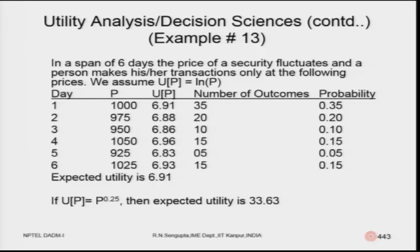Consider Example 13. Over a span of six days, the price of a security fluctuates, and a person makes transactions only at certain prices. The utility function is logarithmic. The table has columns for: day, price, corresponding utility (log-based), number of outcomes, and the resulting probabilities. The main task is to find the overall expected value of utility.